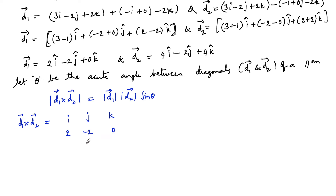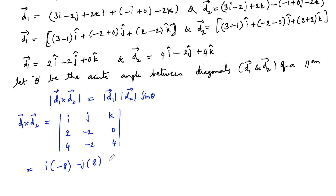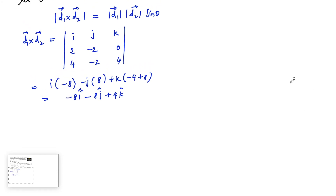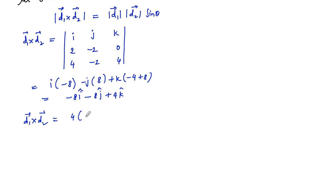D1 cross d2 is the determinant with i, j, k; scalar components of d1 are 2, minus 2, and 0; scalar components of d2 are 4, minus 2, and 4. This gives i times of minus 8, minus j times of 8, plus k times of minus 4 plus 8, which is minus 8i minus 8j plus 4k. Taking 4 as common, we get 4 times of minus 2i minus 2j plus 1k cap.